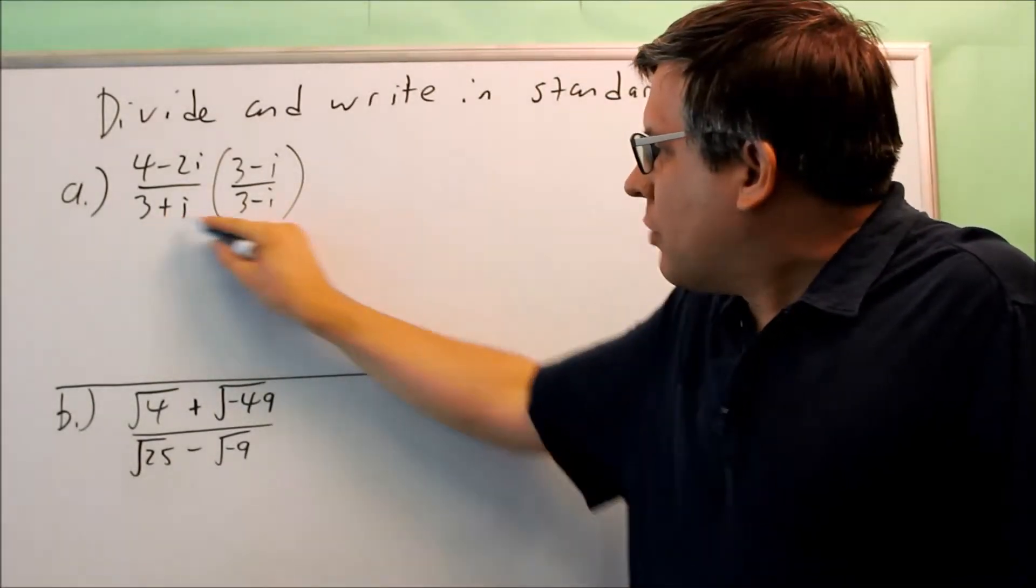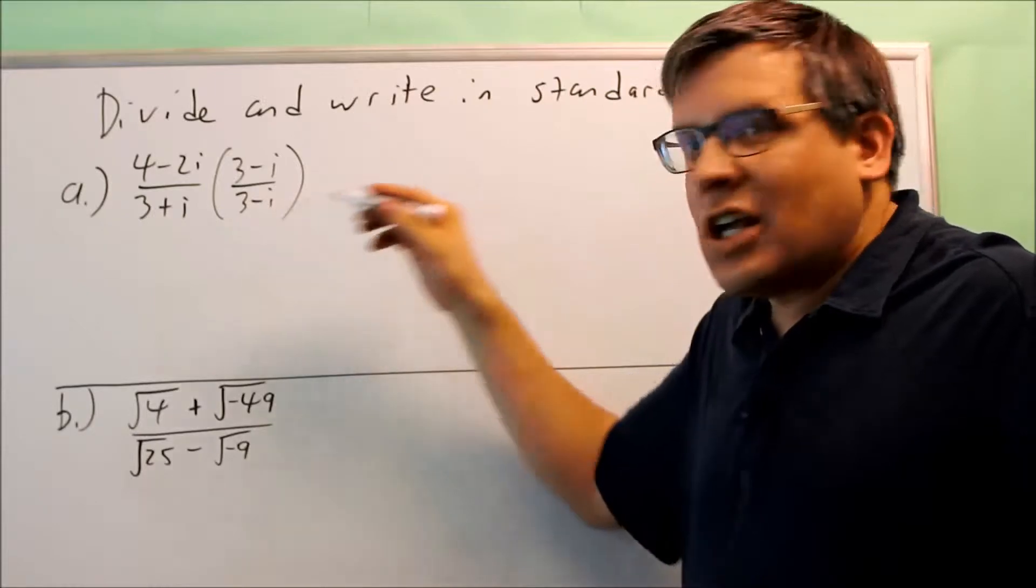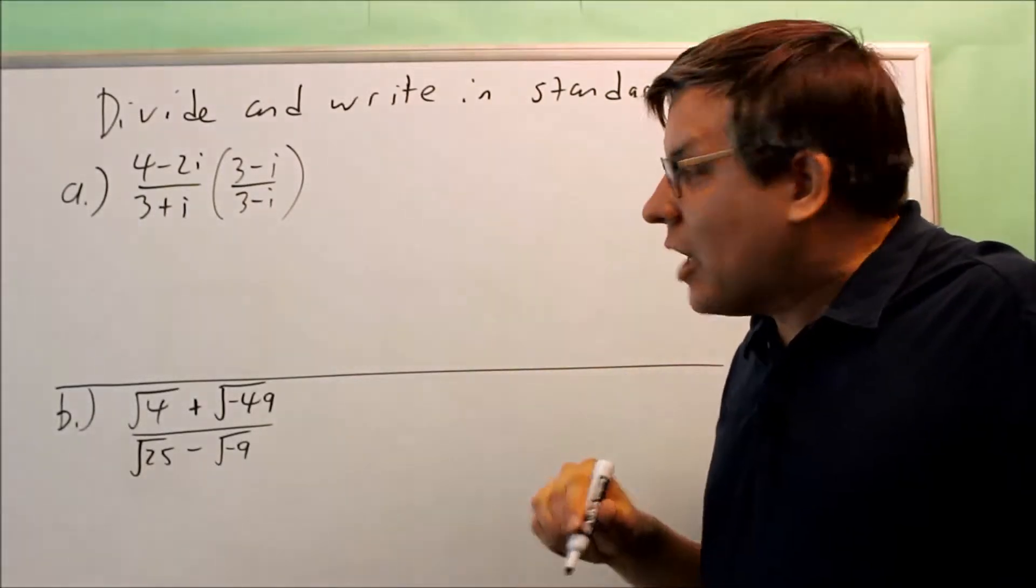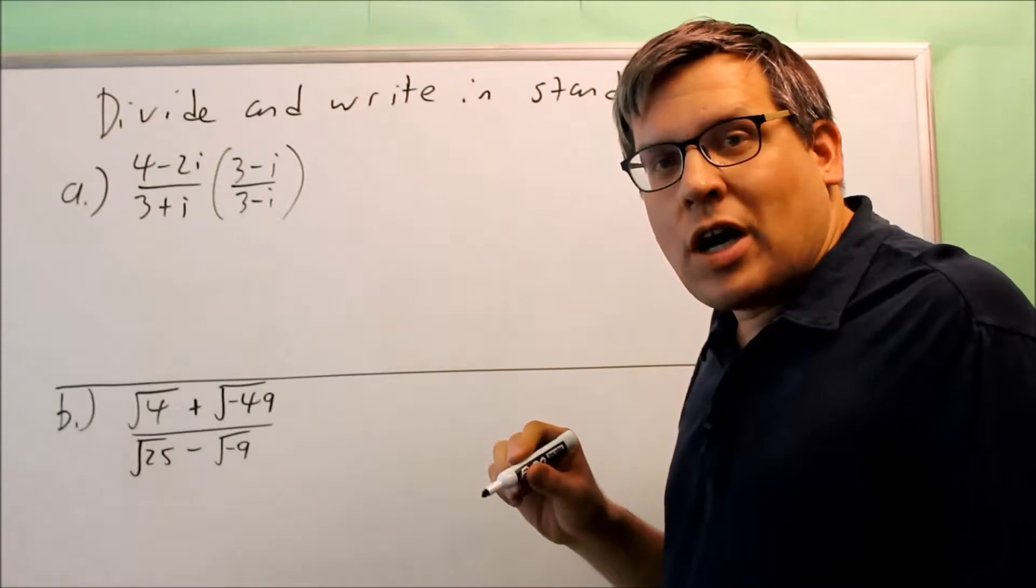So for this, by multiplying what will happen is you're going to get the i to cancel out and you'll be able to get a whole number on the bottom and that's why we want to do this process.